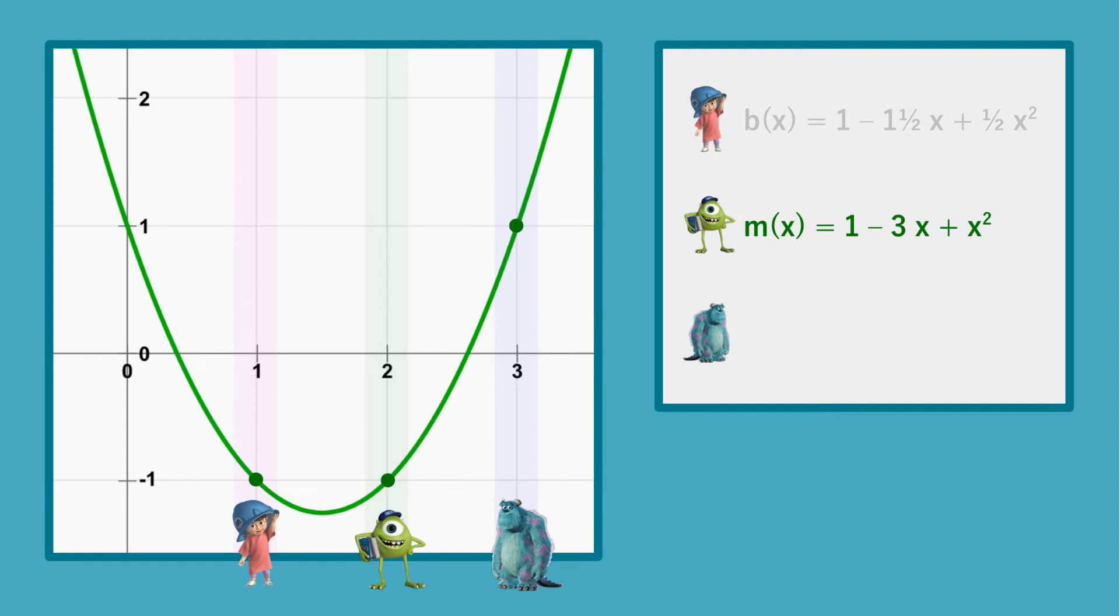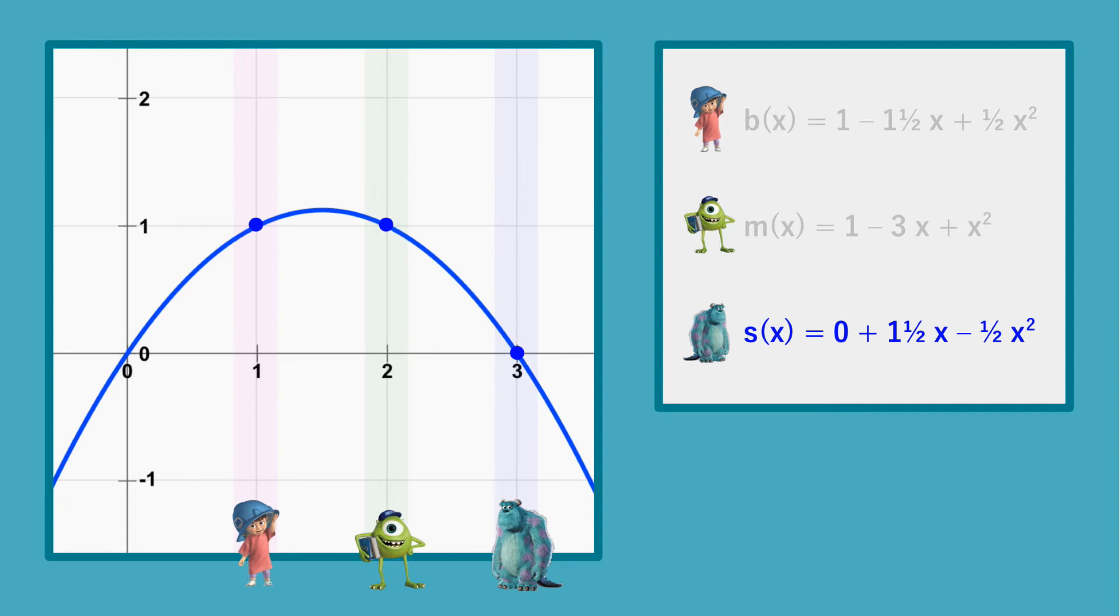And finally, also Sully crafts the secret polynomial. He makes sure that for x is 0, the value is 0, because that is his vote.